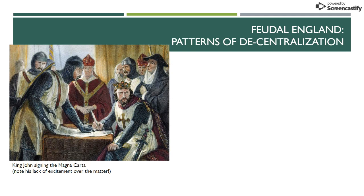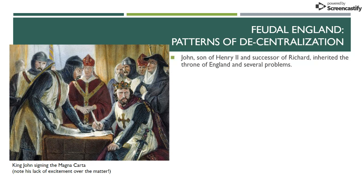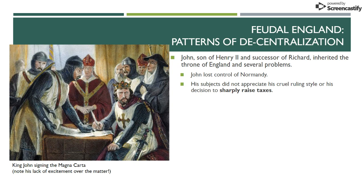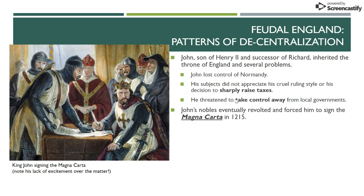Just like there are patterns of centralization, there are also patterns of decentralization in England, and that all starts with one of Henry II's sons, John — the successor of his older brother Richard the Lionheart, who is famous from the Crusades. John is basically a villain in history, so much so that he's featured as the villain in whatever variation of Robin Hood you've ever seen. John lost control of a lot of territory, and his failed military campaigns essentially made him raise taxes. This sharp raise in taxes angered the nobles, and John threatened to take control of them — throwing nobles who refused to collect taxes for him in jail without ever giving them a trial. In the end, his cruel policies and the sharp raise in taxes caused the nobles to take action.